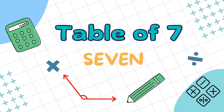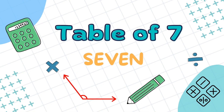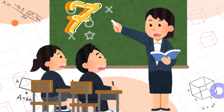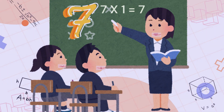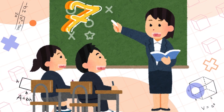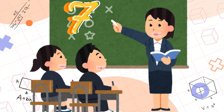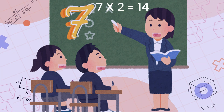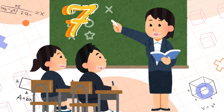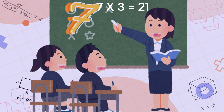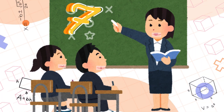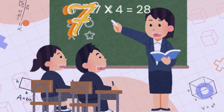Table of 7. 7 ones are 7, 7 twos are 14, 7 threes are 21.